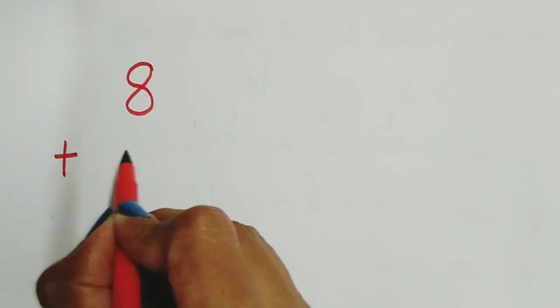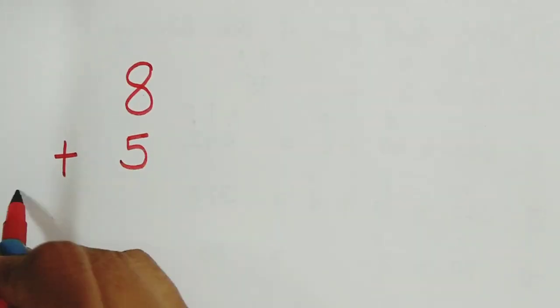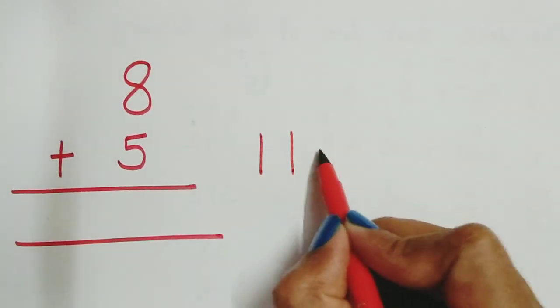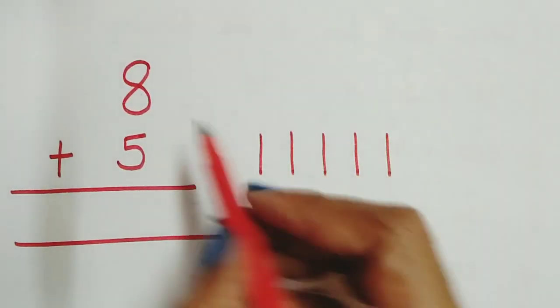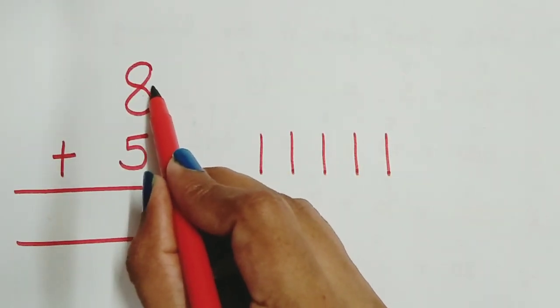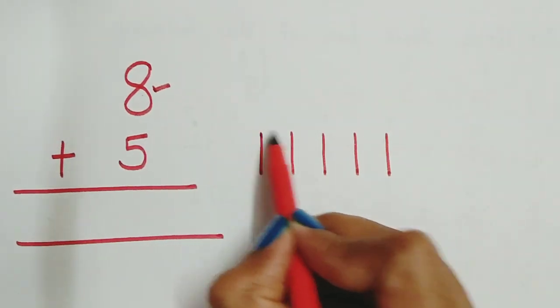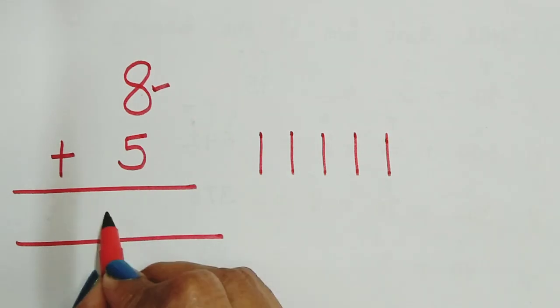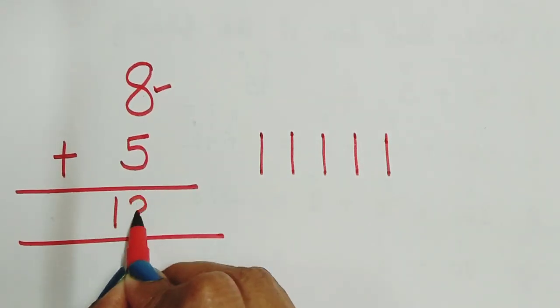8 plus 5. Draw 5 lines: 1, 2, 3, 4, 5. Do counting after 8. This line is 9, 10, 11, 12, 13. And our answer is 13.